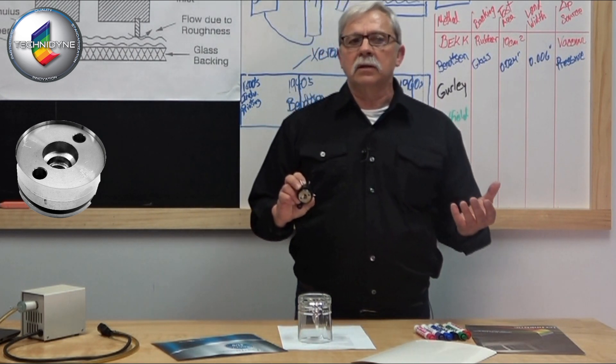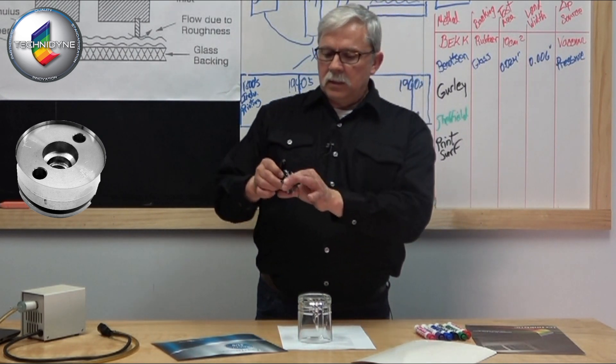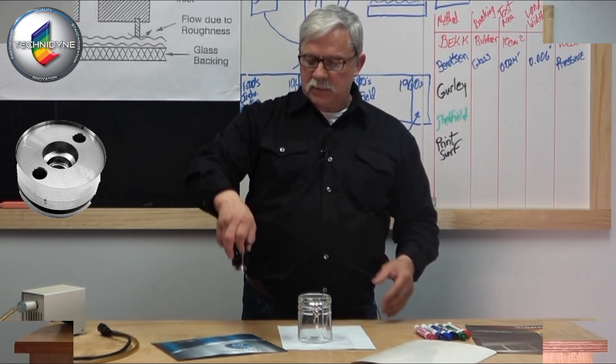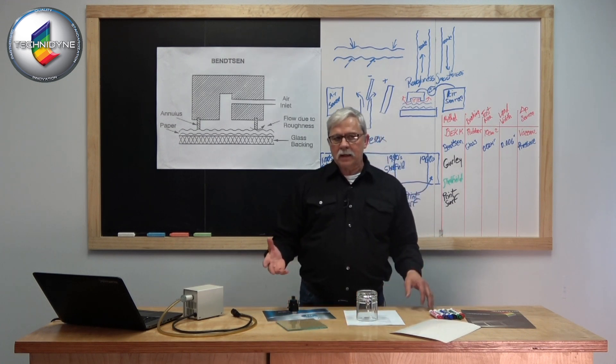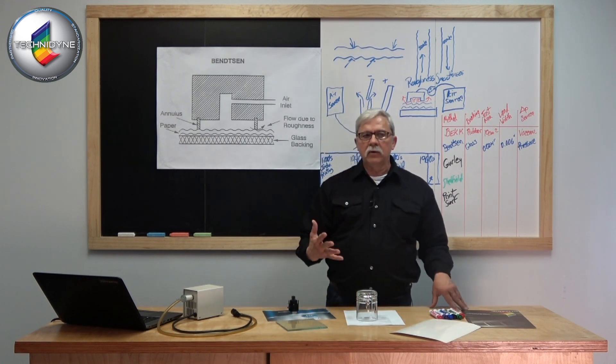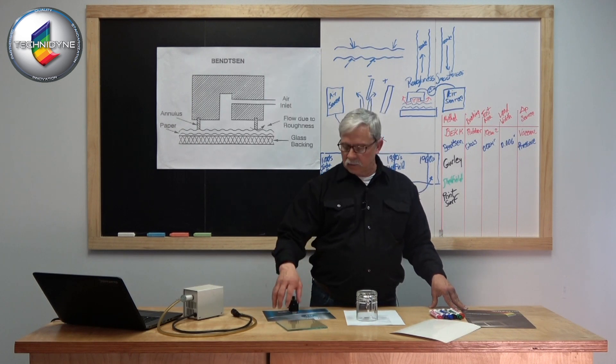They decided to take a single annular band, wrap it around a cylinder slug, affix it to some mechanism that they could easily raise and lower off the paper sample. They were going to use glass for their backing system, a very good firm backing.